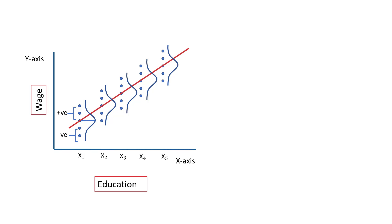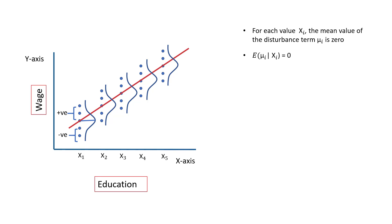Symbolically, it is written as: the expected value of the error term given x_i, or for each value of x, is equal to 0. That is why in some books it is called the zero mean value of disturbance. The intuition behind this assumption is that the error term holds the effect of other variables that are not explicitly considered in the model. So if the sum of the error term is 0, then the error term is not affecting the mean value of y. In short, this assumption requires that the error terms should be normally distributed.